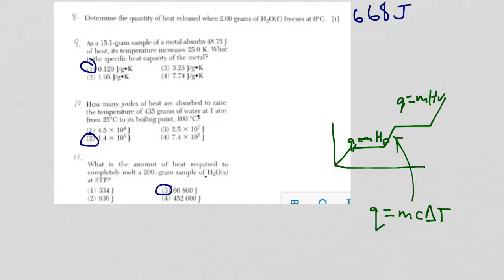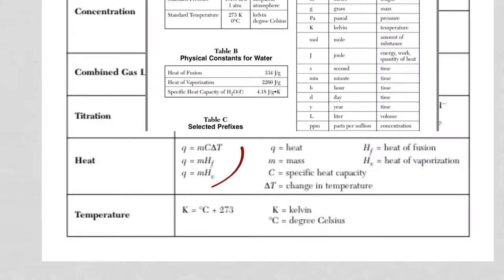Okay, welcome back. Check out your answers, and I'll do some explaining. So for question 8, determine the quantity of heat, that's Q, released when 2 grams of liquid water freezes at 0. You need to know where you are as far as the equations go, because there are three heat equations.